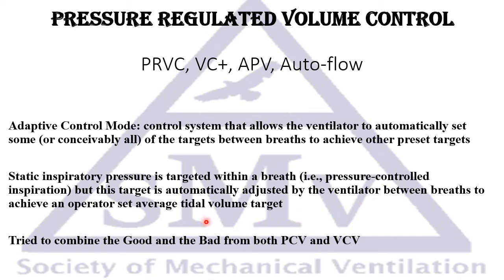This target is automatically adjusted by the ventilator between breaths to achieve the operator-set average tidal volume target. Basically, the operator sets a certain tidal volume and the ventilator adjusts the pressure up or down gradually to achieve that tidal volume.